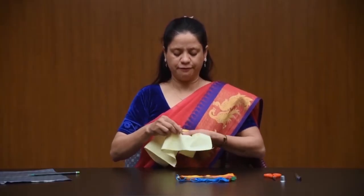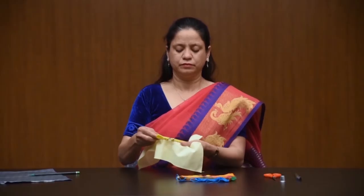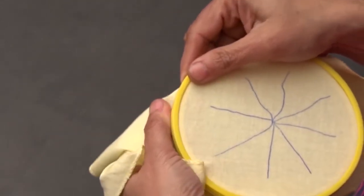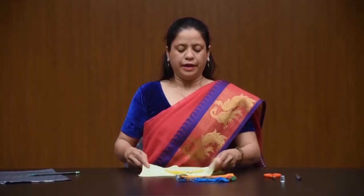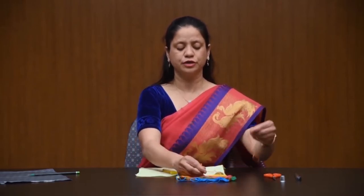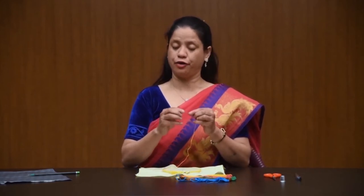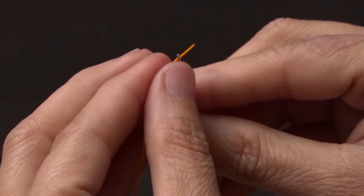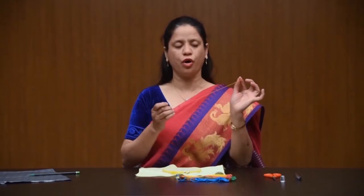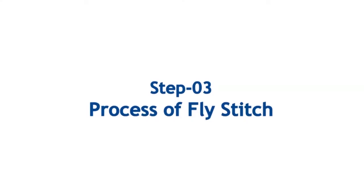Stretch the fabric firmly. Insert the thread or floss in the needle. Do not take too long or too short a thread. Generally in embroidery thread or floss there are six strands, but usually we take two strands. Make a small knot at one end of the thread.